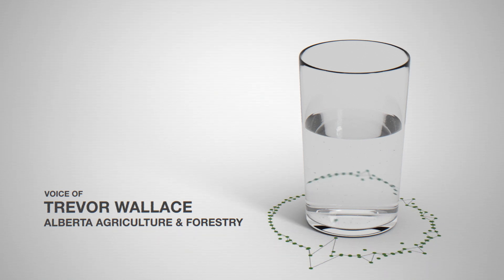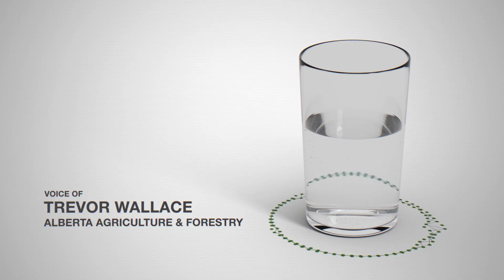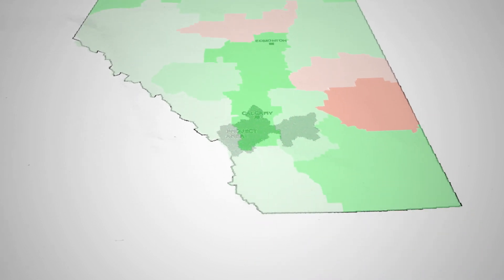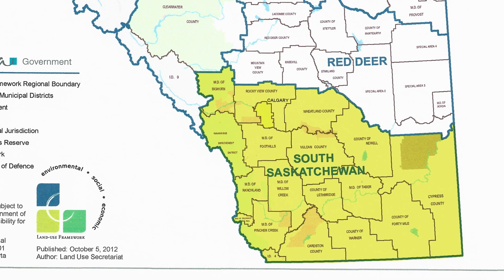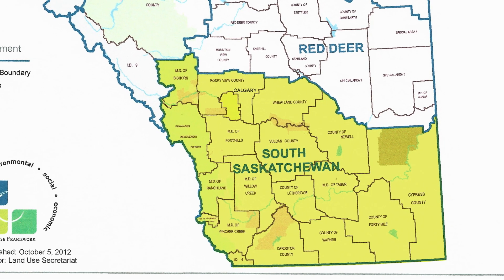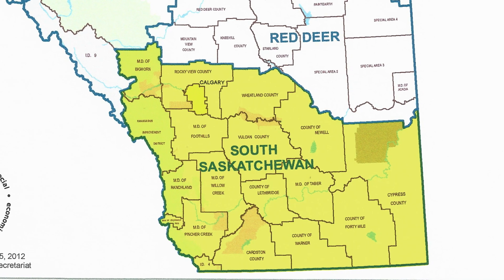The Bow River Phosphorus Management Plan was really created for two reasons. The first being there was a concern on water quality within the Bow River reach, partly because the area accounts for about 2% of the province and has about a third of the population growth in it. The other reason was because of the land use framework. Within the framework, there are management responses — if a threshold is exceeded, the question is how we get everybody together, all the parties involved, to address that exceedance.